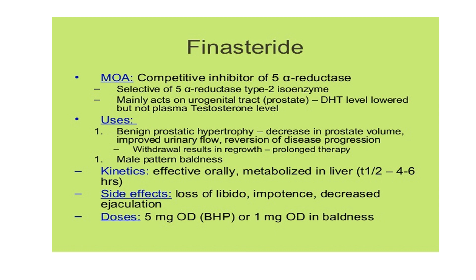Uses of finasteride: since DHT is active in the prostate and hair follicles, it is used for benign prostatic hypertrophy (BPH) — it decreases prostate volume, improves urinary flow, and reverses disease progression, though withdrawal may lead to regrowth after prolonged therapy. Second use is male pattern baldness. Pharmacokinetics: effective orally, metabolized in the liver, half-life 4 to 6 hours. Side effects include loss of libido, impotence, and decreased ejaculation. Doses: BPH — 5 mg once daily; baldness — 1 mg once daily.